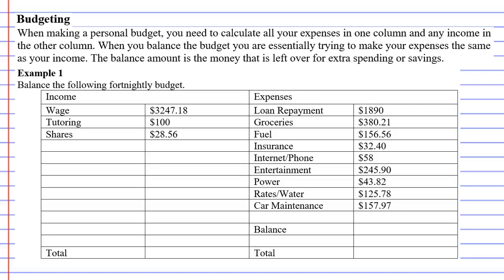In this video we're going to look at budgeting. When you make a personal budget you need to have two columns: an income column and an expenses column. All your expenses are shown in the example, and all the different forms of income are listed here. Quite often people just have one source of income.